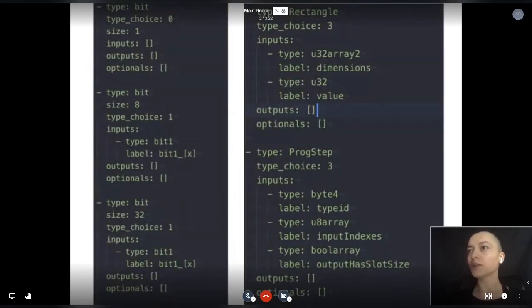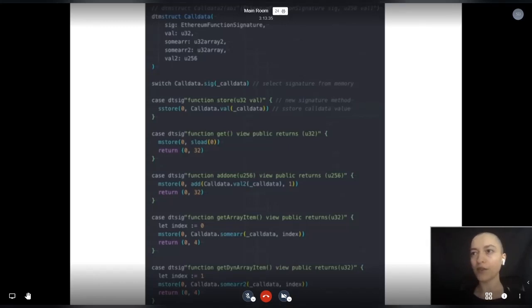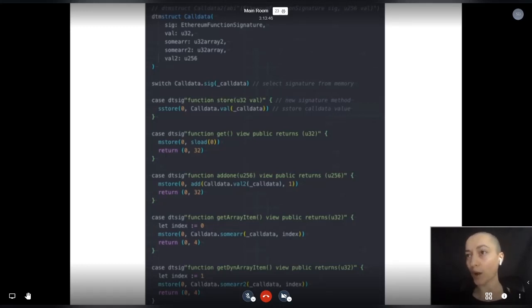The initial type bootstrap for the Yul+ extension was done with type definitions from a JSON file, where types were defined based on other types. You can find this in my Yul+ fork in the Taylor branch. This allowed me to more easily extend Yul+ to memory structs containing dynamic types, and we used it to start developing the on-chain Taylor interpreted type system based on our Pipeline model.